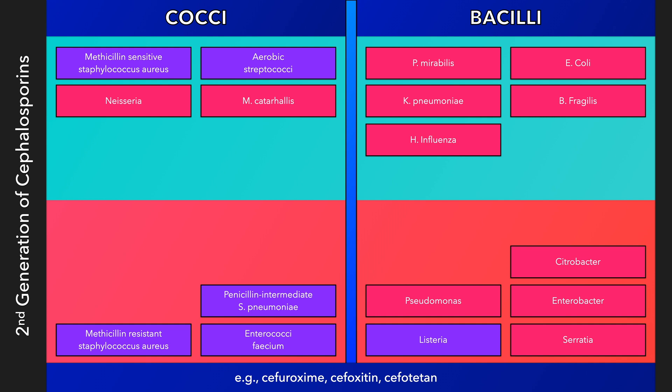Both subgroups provide coverage against gram-negative cocci, including Neisseria and Moraxella, and are more effective than the first generation cephalosporins against E. coli, Klebsiella pneumoniae, and Proteus mirabilis. Cefuroxime is a true cephalosporin, and it maintains the first generation's activity against aerobic gram-positive cocci while providing coverage against Haemophilus influenzae.